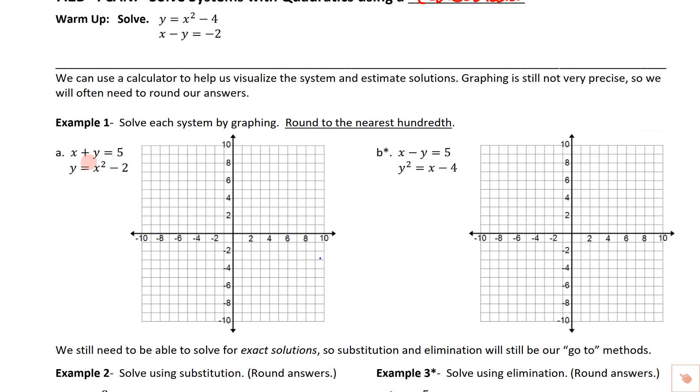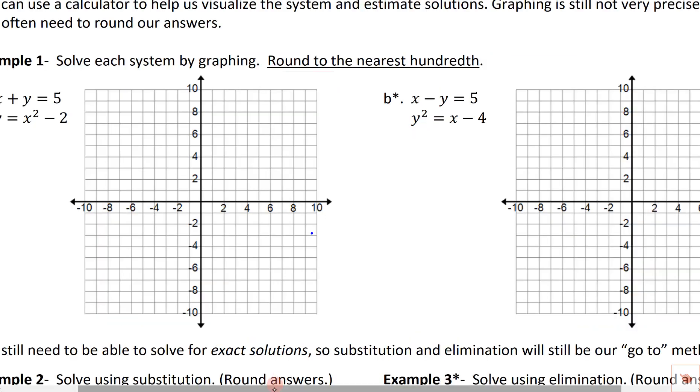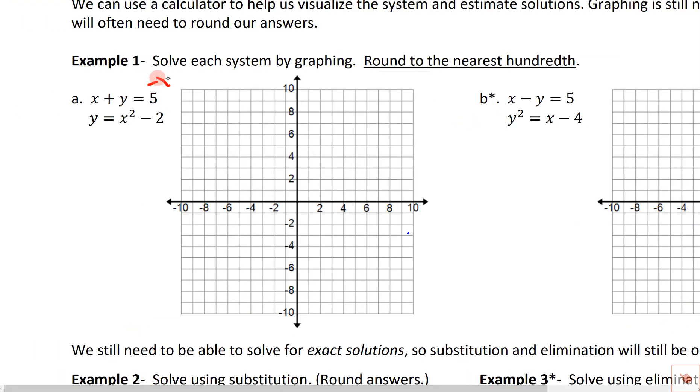We're going to solve each one of these and round to the nearest hundredth. Take a look at this one. We can actually graph these. These aren't too bad. So I'm going to blow this up just a little bit. This one, I'm going to subtract x from both sides, and I get y equals negative x plus 5.